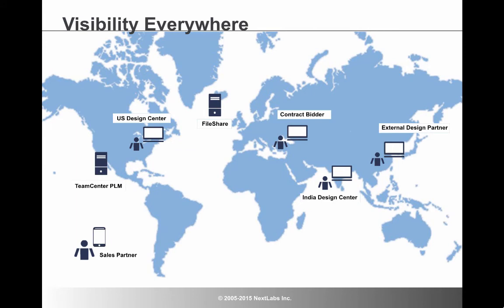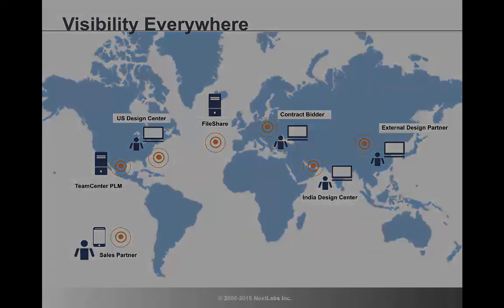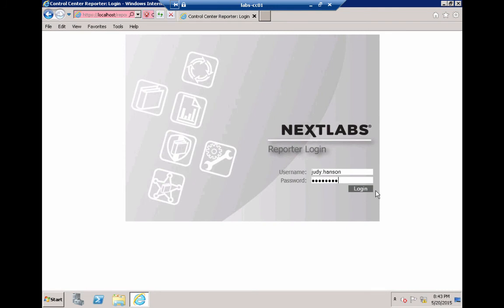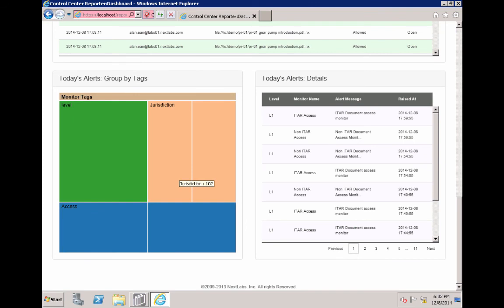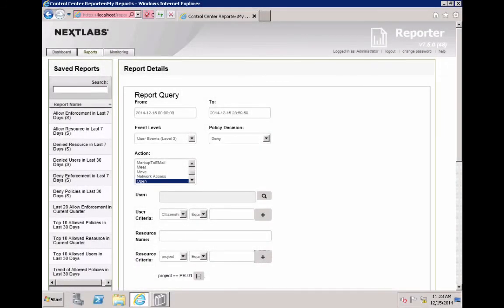A final requirement that global design engineering teams need to address is achieving visibility into how sensitive intellectual property is being accessed, shared, and used. NextLabs EDRM provides granular reporting capability that allows organizations to monitor and audit the access and usage of their sensitive data across all systems, applications, and devices. NextLabs EDRM provides Reporter, a browser-based tool that can be accessed from any workstation. The dashboard provides a snapshot of events, top 10 allowed policies, allowed users, and most accessed resources, and also includes custom-defined alerts — events you flag to keep track of how your IP is being handled. You can also create custom reports.